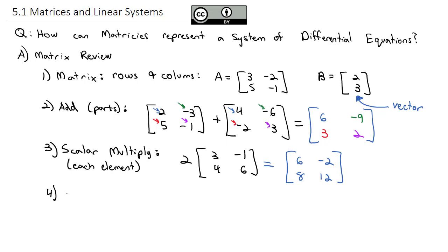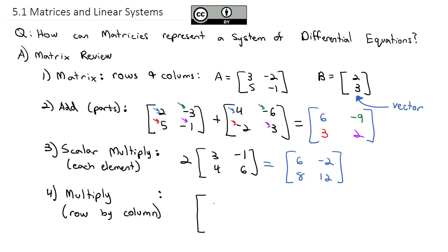We can also multiply matrices together, which is a little more involved. We multiply each row by the column — essentially what we call the dot product in linear algebra. We take the dot product of the row and the column. This is the operation you really want to make sure you know how to do. For example, we'll take [4, 1; -3, 2] and multiply it by the vector [3; -1].